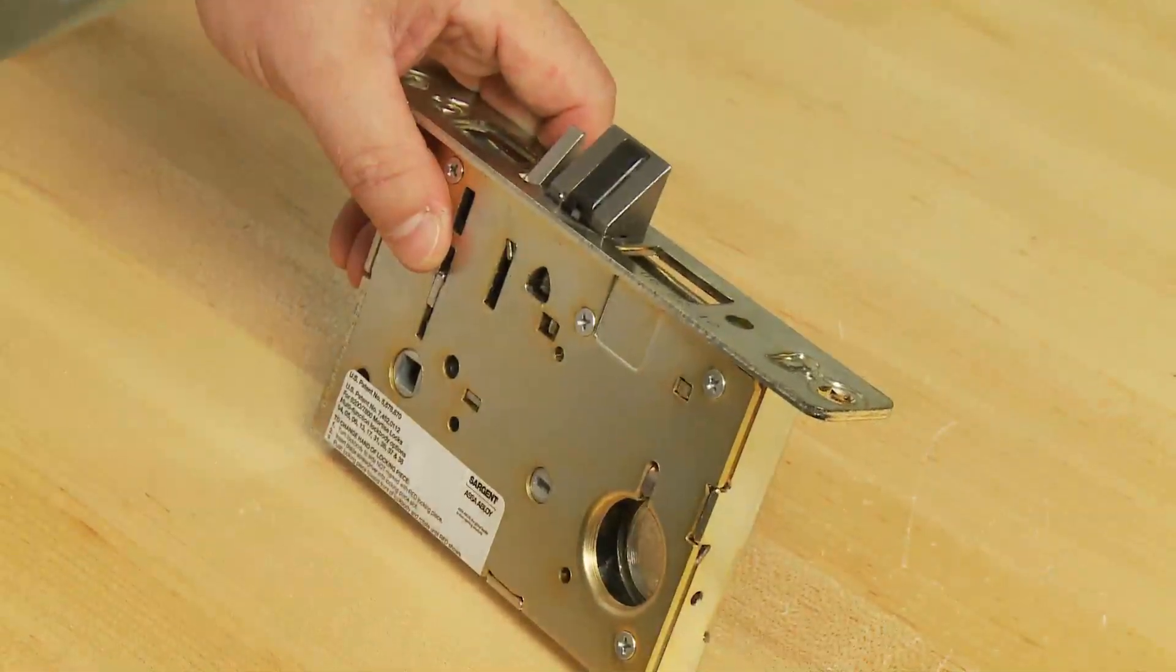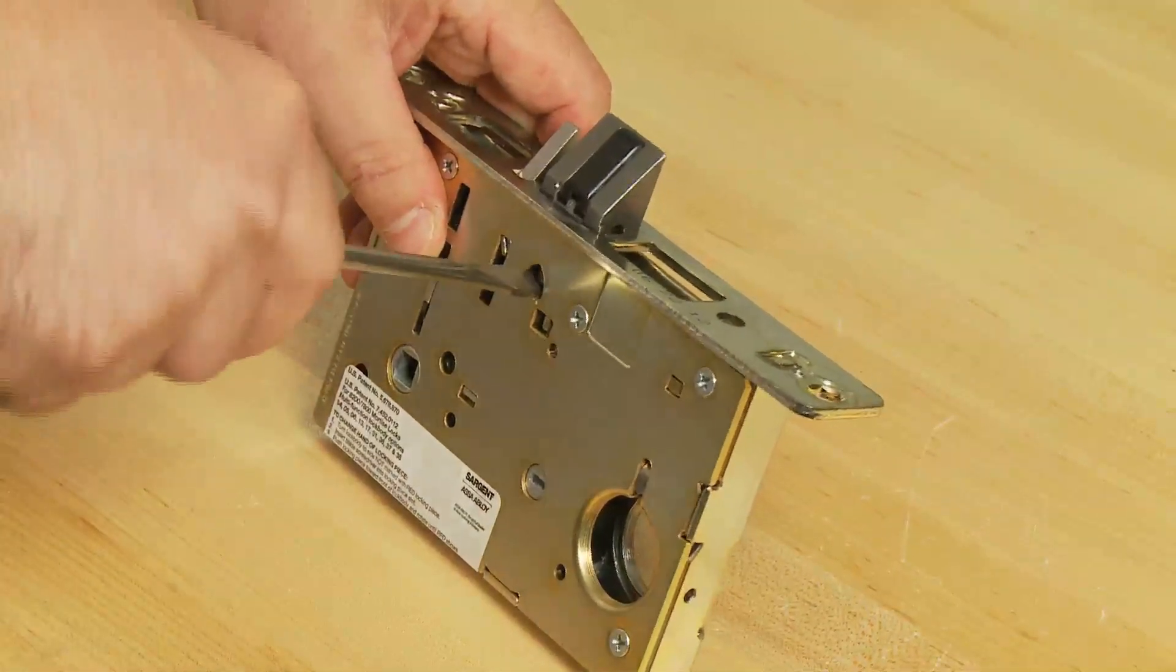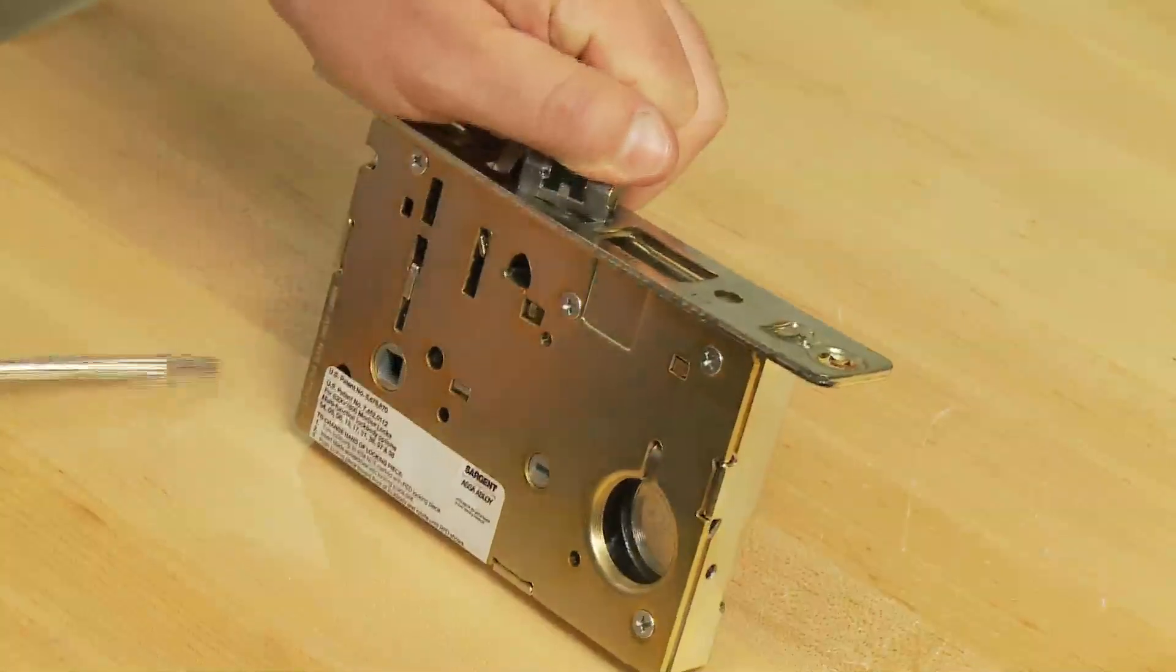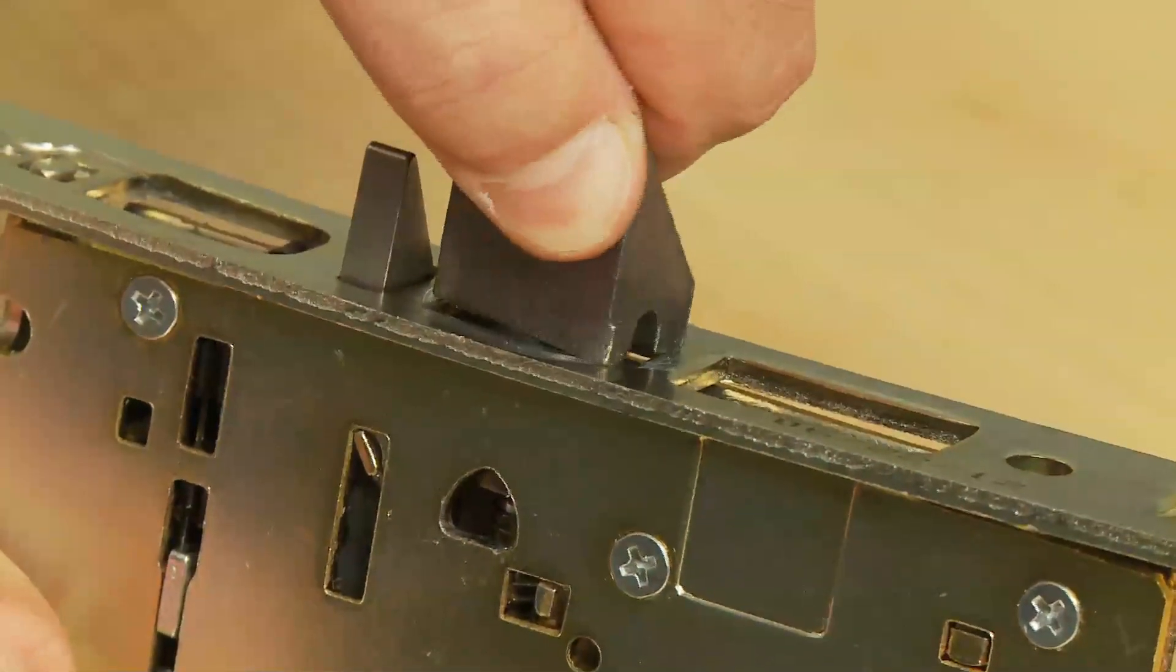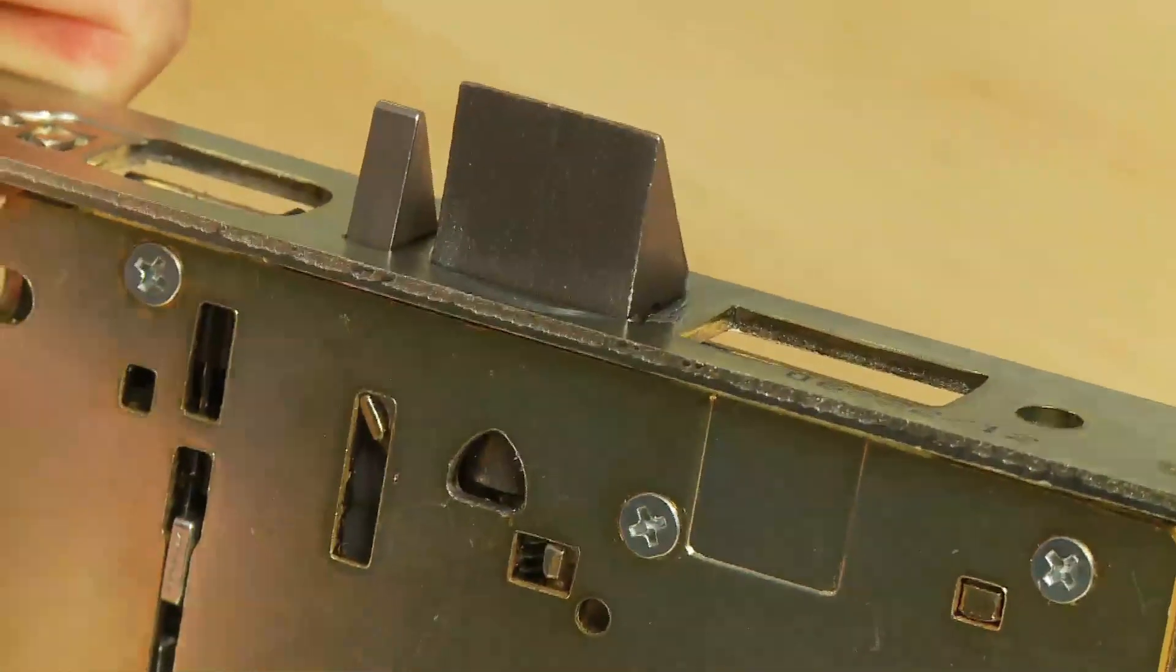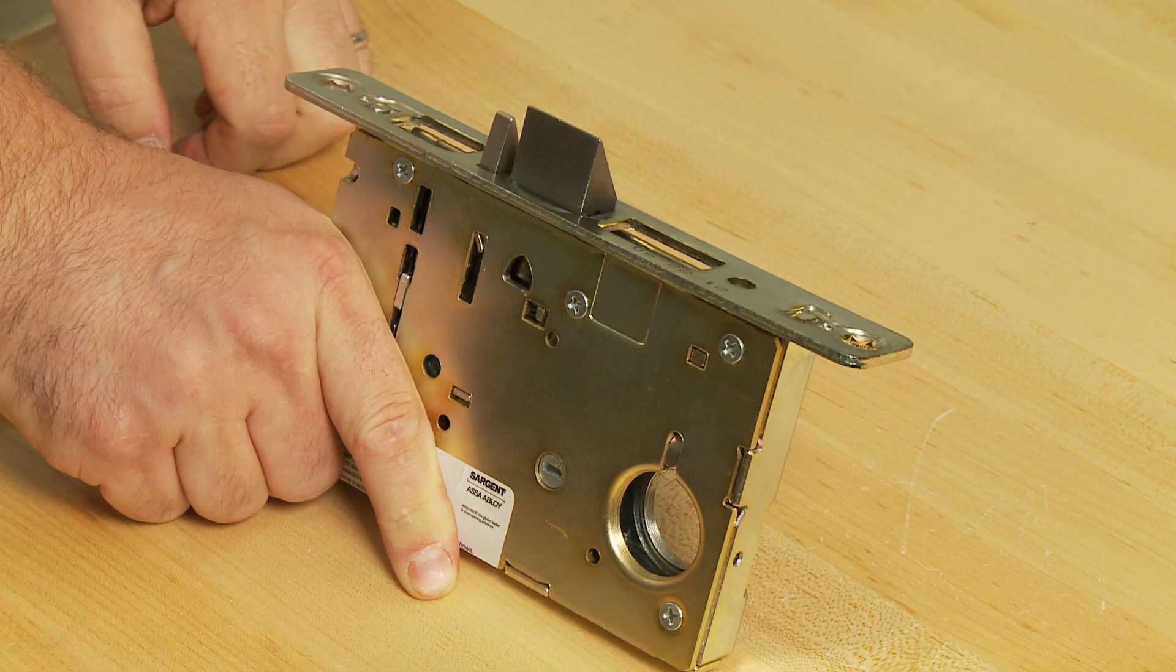Next, insert the screwdriver blade into the spade-shaped slot and rotate 90 degrees until the latch clears the lock front. Grab the latch bolt, remove the screwdriver and rotate the latch bolt 180 degrees so the latch will automatically re-enter the lock body.